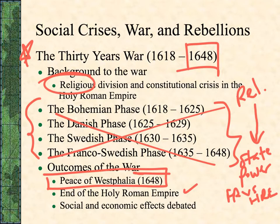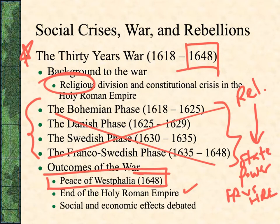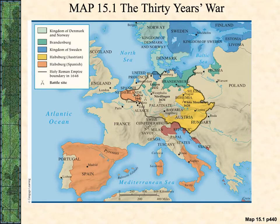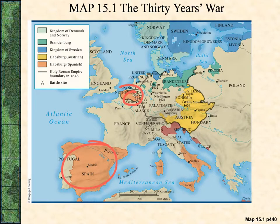The Peace of Westphalia is the end of the Holy Roman Empire. Its effects have been debated for a long time. They recognize three religions in Germany, dissolve the Holy Roman Empire altogether, and give power to the princes who can decide between Catholicism, Lutheranism, and Calvinism as their choice for their state religion.